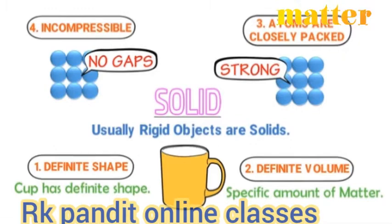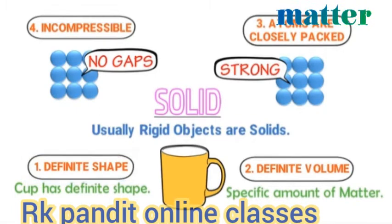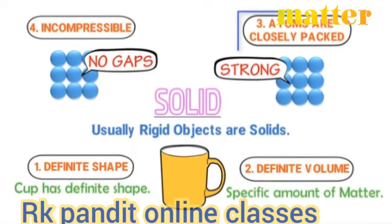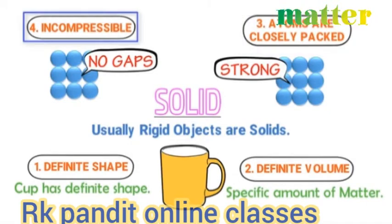Therefore, remember these four properties of solids: solids have definite shape, solids have definite volume, molecules of solids are closely packed together, and they are incompressible.